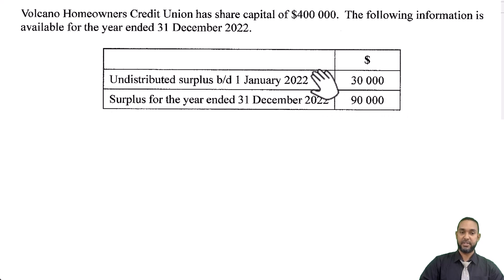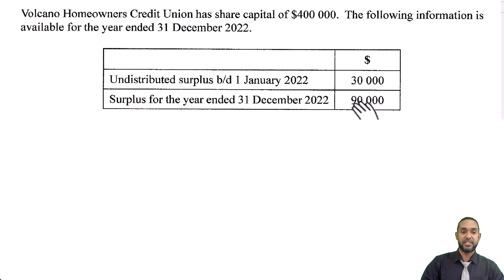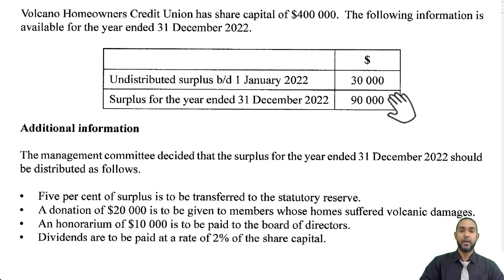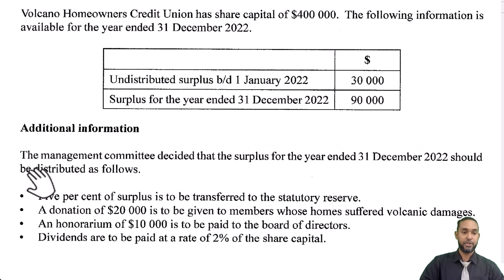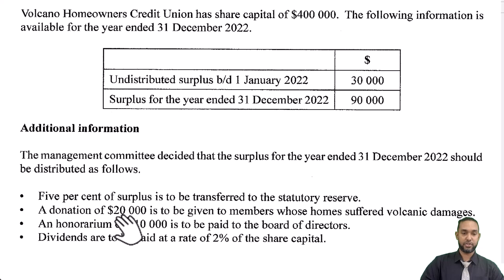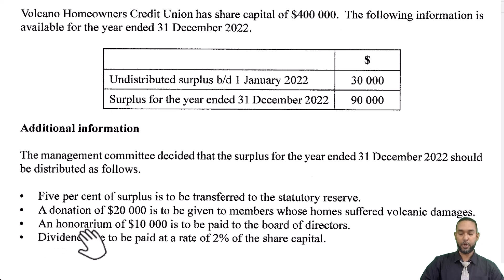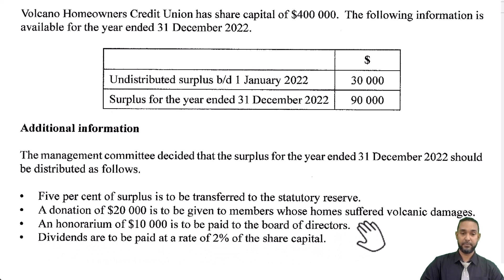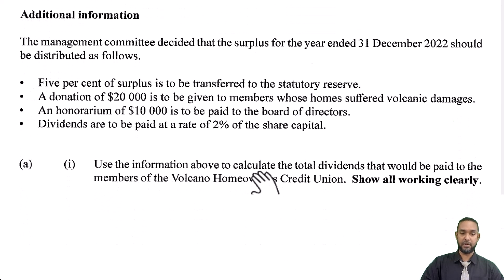The undistributed surplus is the non-profit version of retained earnings, and the surplus for the year is their version of net profit. Additional information: the management committee decided that the surplus for the current year should be distributed as follows — 5% of surplus is to be transferred to the statutory reserve, a donation of $20,000 is to be given to members whose homes suffered volcanic damages, an honorarium of $10,000 is to be paid to the board of directors, and dividends are to be paid at a rate of 2% of the share capital.